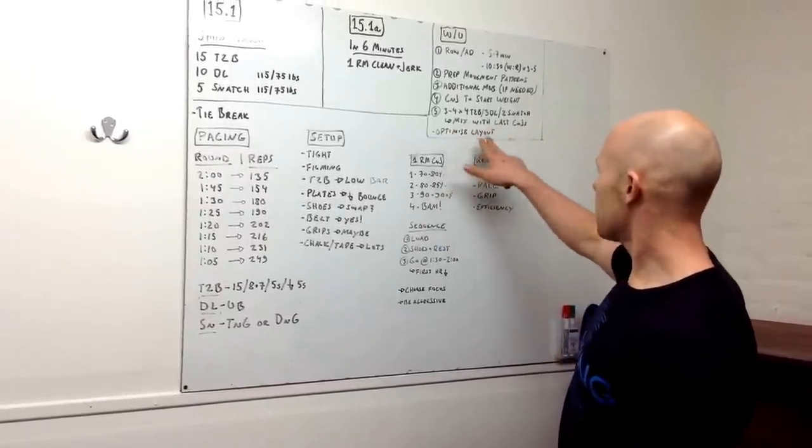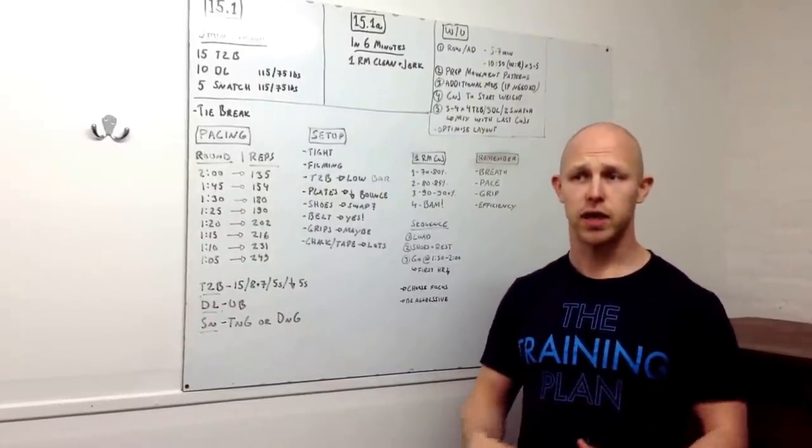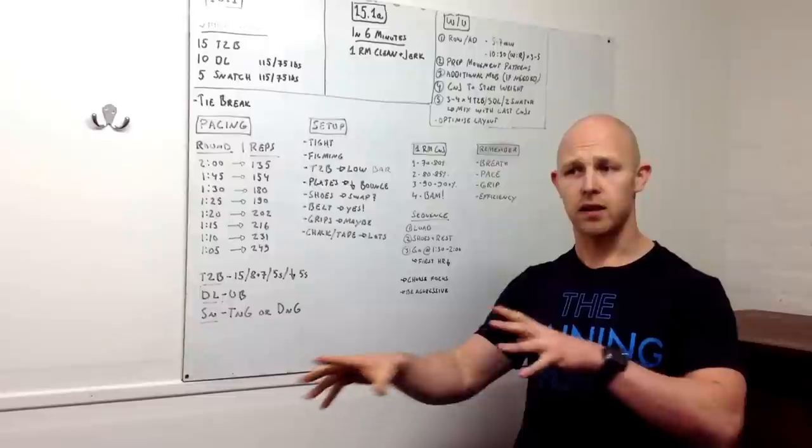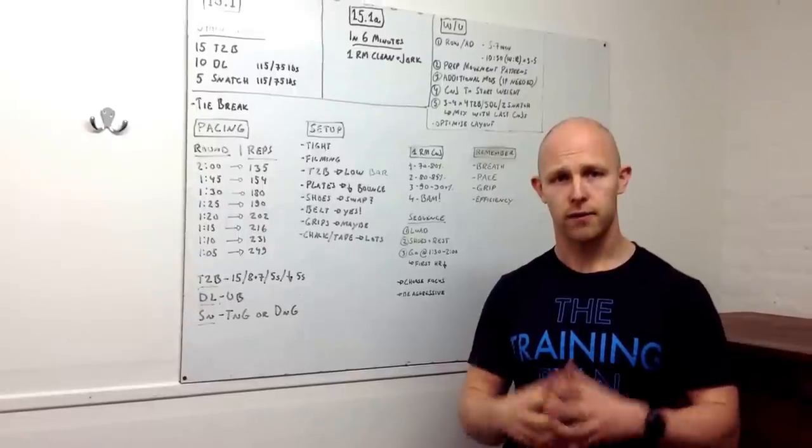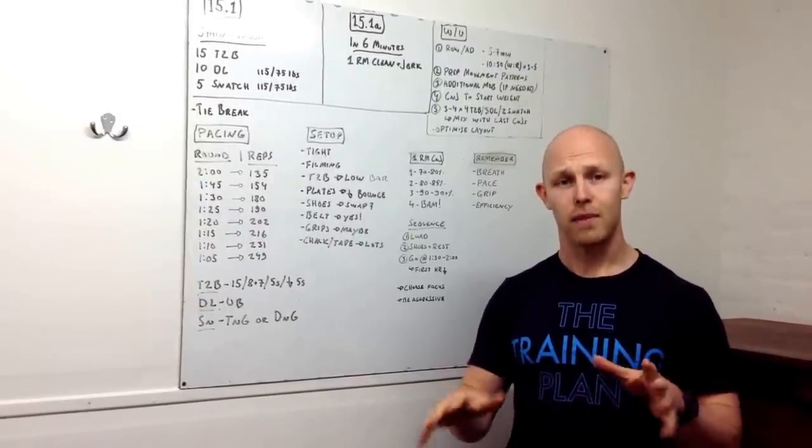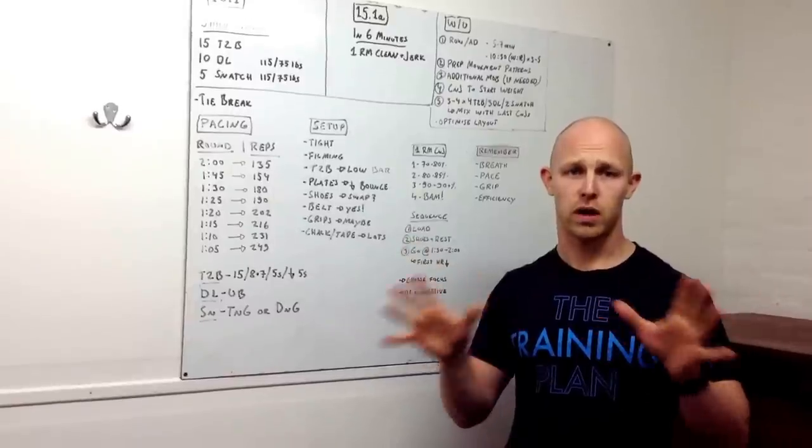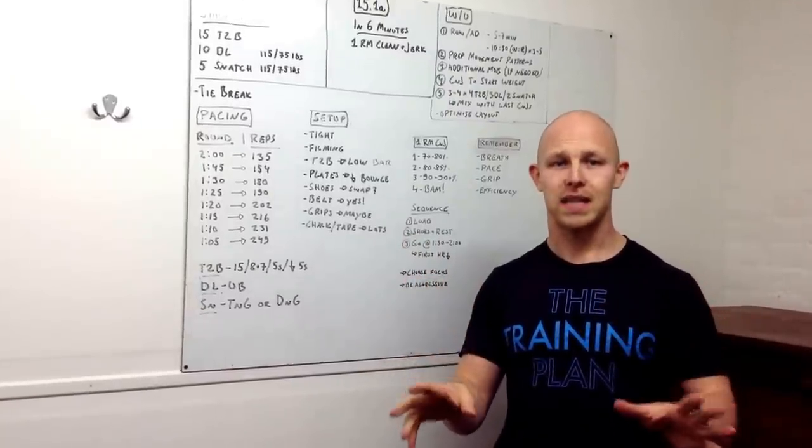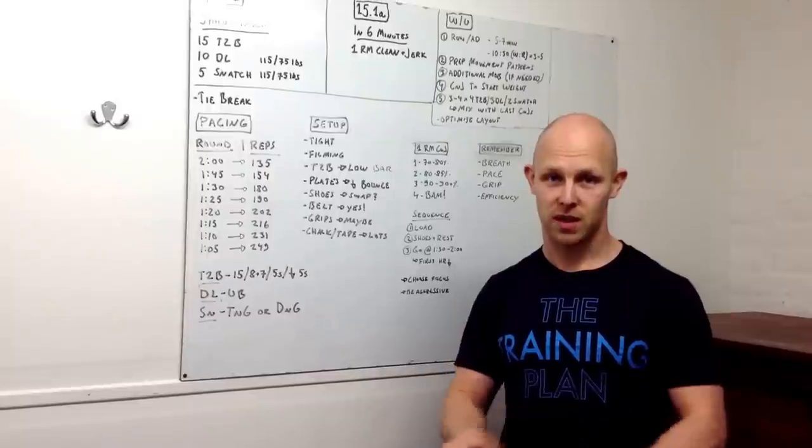And then, optimize the layout. When you're doing the warm-up, you're going to find some inefficiencies in your setup. Make sure you lay out the plates in an efficient way so it's quick to load up the barbell once you decide what weights you're going to start off with the 15.1A. Make everything run smoothly. Make sure everything is in the frame. Make sure no one's going to walk in the frame. Take care of those basic details. You don't want to be that guy in the last rep that something goes horribly wrong.